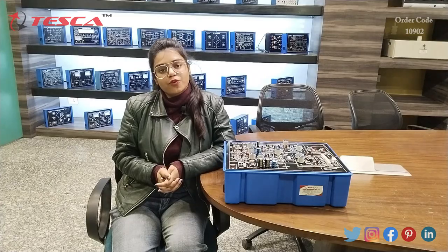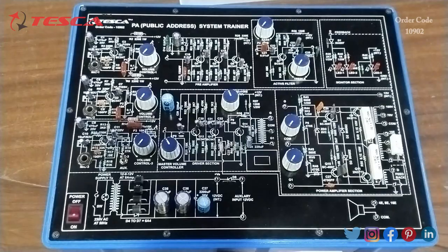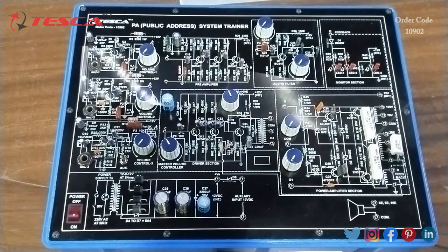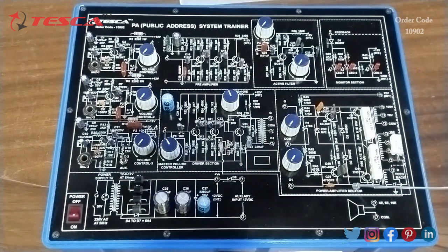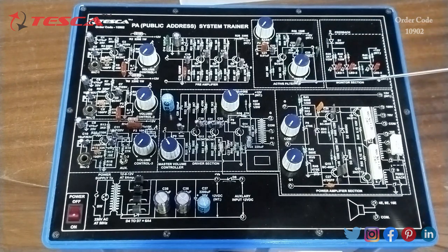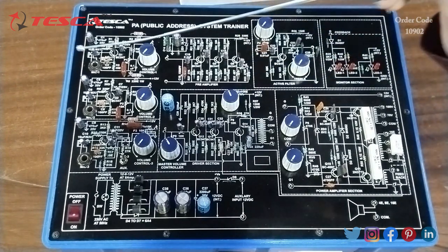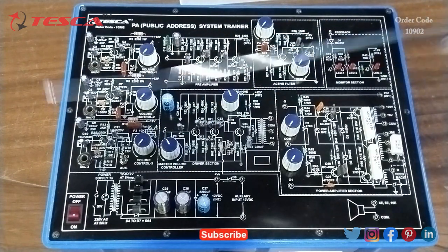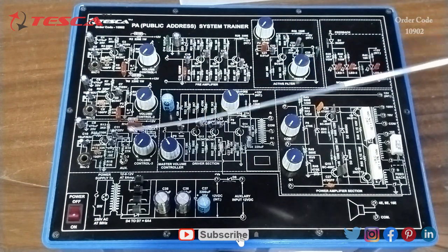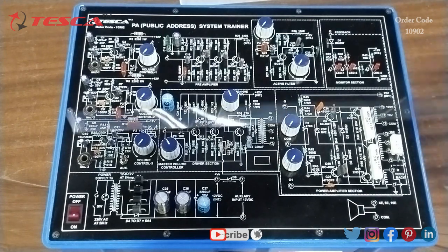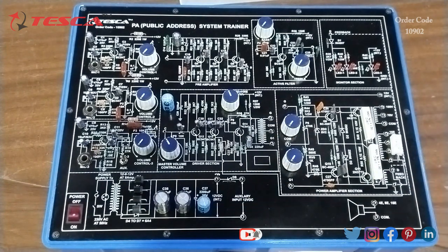Now I am going to give you an overview of this apparatus. In this apparatus we have different blocks for the benefit of users. The first block is power supply block, then we have the amplifier power amplifier section, monitor section, active filter section, pre-amplifier section. From here we can connect the microphone and through this variable switch we can vary the volume of microphone. This is the power on off switch.